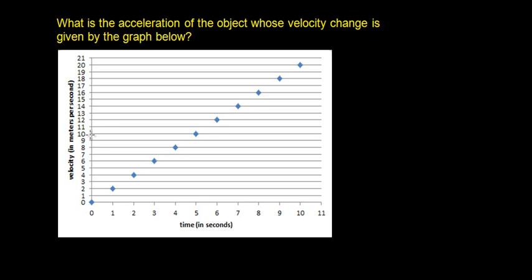In this video, we're going to calculate the acceleration of an object whose velocity versus time graph is given. In order to calculate the acceleration from a velocity versus time graph, we need to choose two different points. One we'll label as our initial velocity and time, and the second we'll label as our final velocity and time.